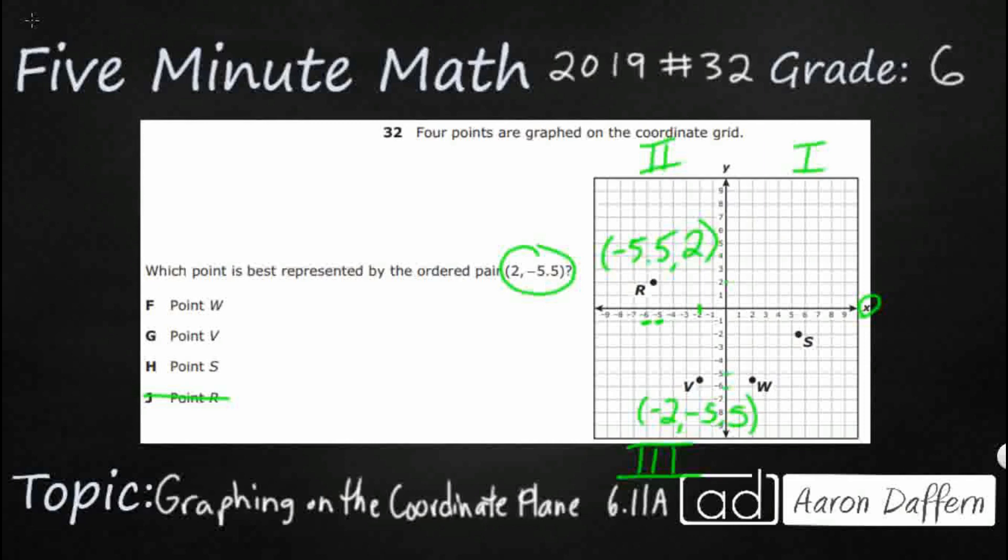Notice though, we've got a -2. We don't need a -2. We need a positive 2. And so we are going to not choose V, it's close, but not where we need to.